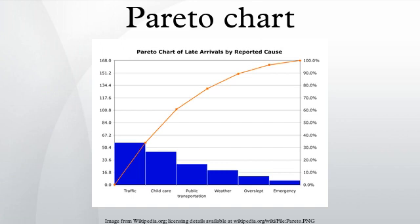To take the example above, in order to lower the amount of late arrivals by 78%, it is sufficient to solve the first three issues. The purpose of the Pareto chart is to highlight the most important among a set of factors.